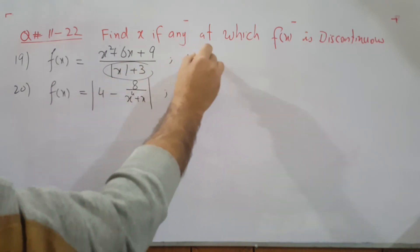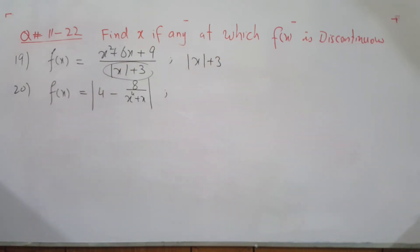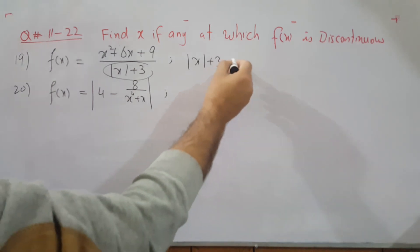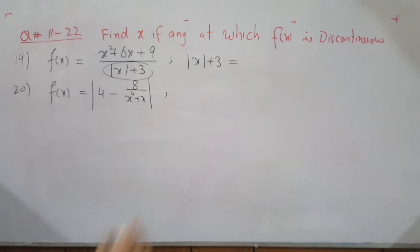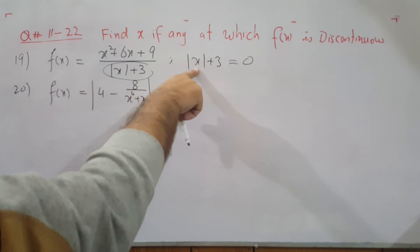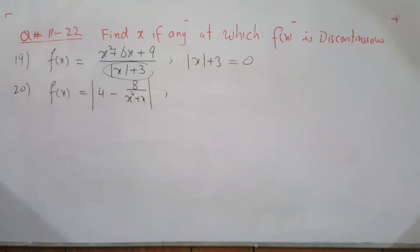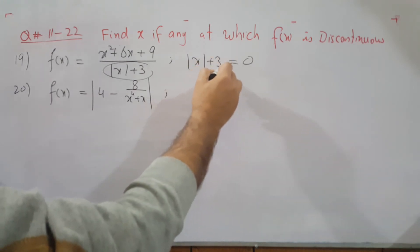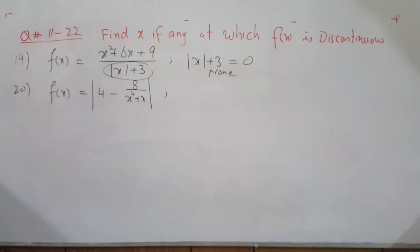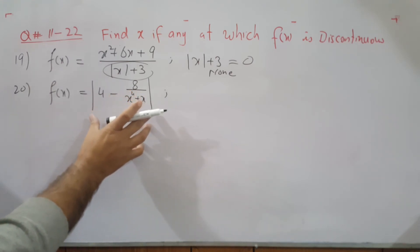Question 19: the denominator is x plus the absolute value of x plus 3. Can this be zero? The absolute value is always positive and 3 is positive, so their sum cannot be zero. Therefore there is no x value at which this function is discontinuous.